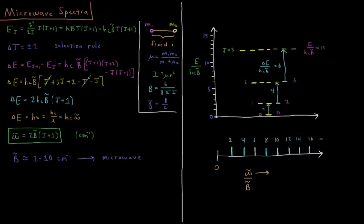This video will discuss the microwave spectra of rotating diatomic molecules in the rigid rotor model. We have our rigid rotor model system as we've had for the previous few videos. We have two atoms of mass 1 and mass 2 at a fixed bond length r.